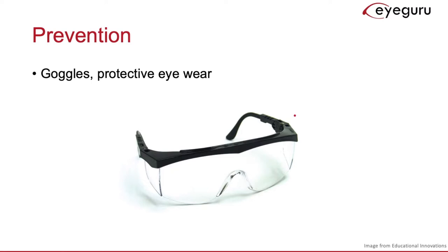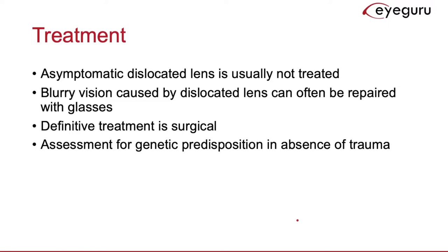Often, lens dislocations do not need to be treated unless they cause symptoms. For mild cases, blurry vision caused by a dislocated lens can be corrected with glasses. Definitive treatment for severe cases is surgery. After management, it may be appropriate to assess the patient for any genetic predisposition — for example, Marfan syndrome or homocystinuria — if no other cause for the lens dislocation is identified.